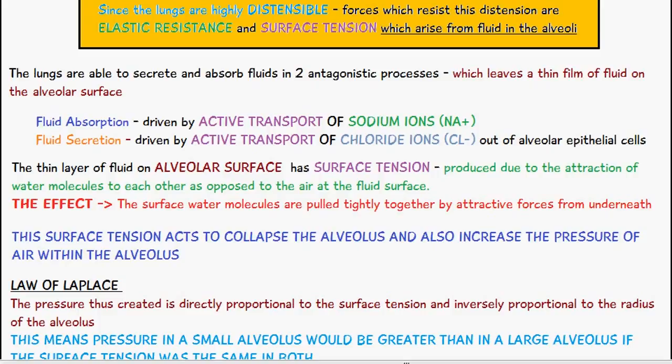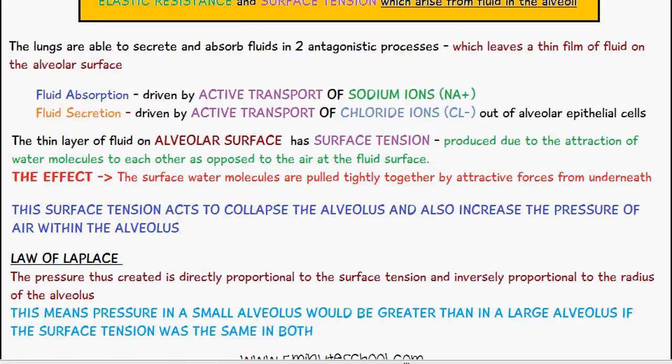So the smaller the radius of the alveolus, the greater the pressure. This means the pressure in a small alveolus would be greater than in a large alveolus if the surface tension was the same in both.